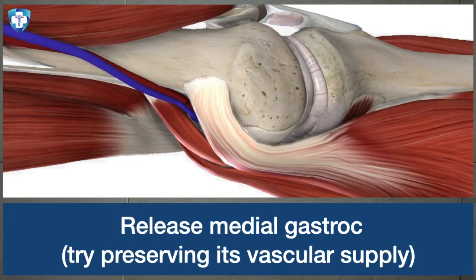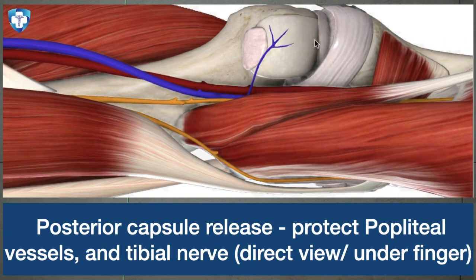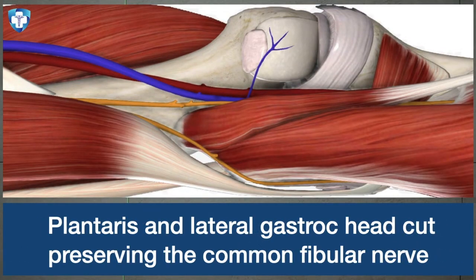We start releasing the muscles one by one. First, we release the medial head of the gastrocnemius while protecting the vessels. Then we release the posterior capsule. Because the vessels lie just posterior to the capsule, we must be very careful — we keep the vessels under finger or use an artery forcep posterior to the capsule before taking the capsular cut. We can see the vessel, tibialis nerve, and common peroneal nerve. We then release the plantaris tendon and lateral head of the gastrocnemius, protecting these vessels throughout.